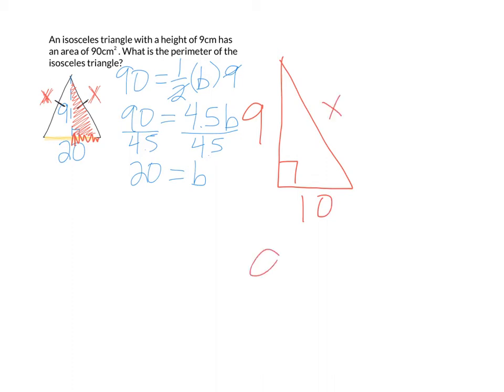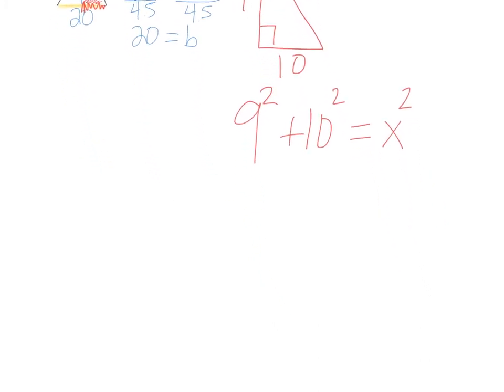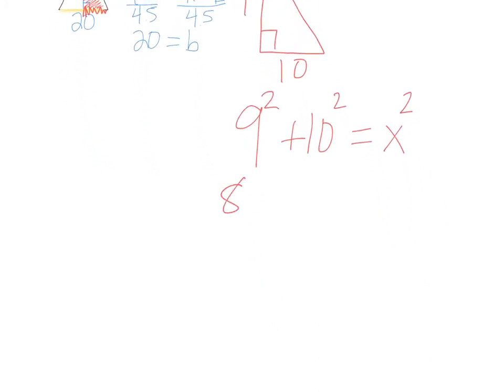So according to Pythagoras, 9 squared plus 10 squared should equal X squared, the hypotenuse. So 9 squared is 81, 10 squared is 100 equals X squared. So adding these together, 181 equals X squared. And now I'm going to take the square root of both sides.